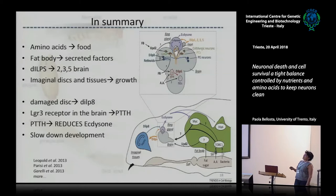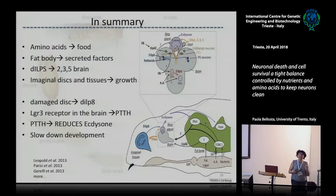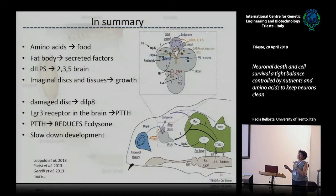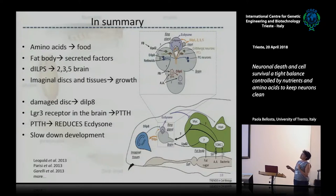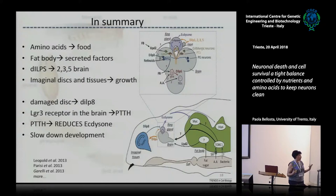To summarize all these factors: from the fat body, there are factors that sense amino acids. The amino acids from food cause the fat body to release factors that can induce production of DILPs, and then the animal can grow. If the disc is damaged, dilp8 is produced, and dilp8 can, in the brain, reduce ecdysone and allow development to be longer, so the animal can recover and develop normally.